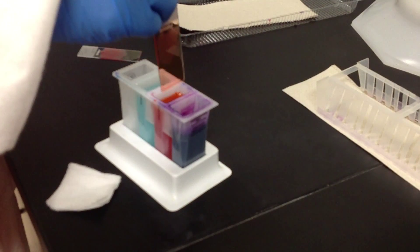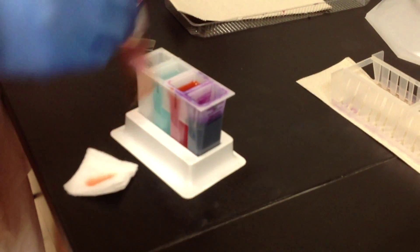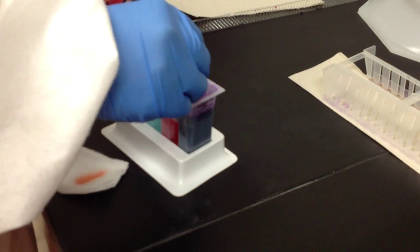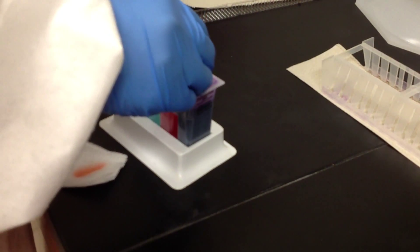After the fifth dip, blot gently on the end only, and then go to the second stain. The same thing: five one-second dips. And then immediately over to the running water.